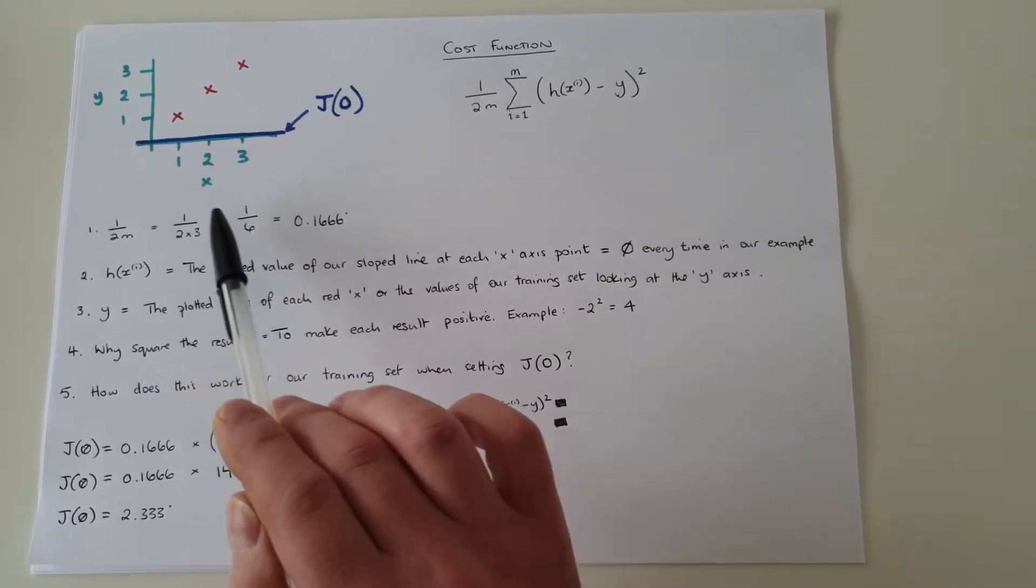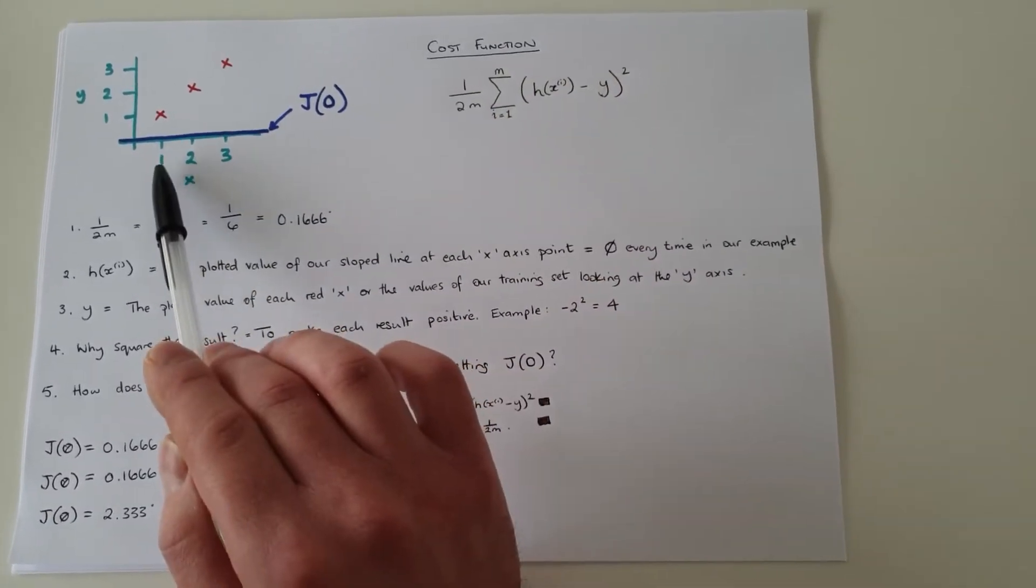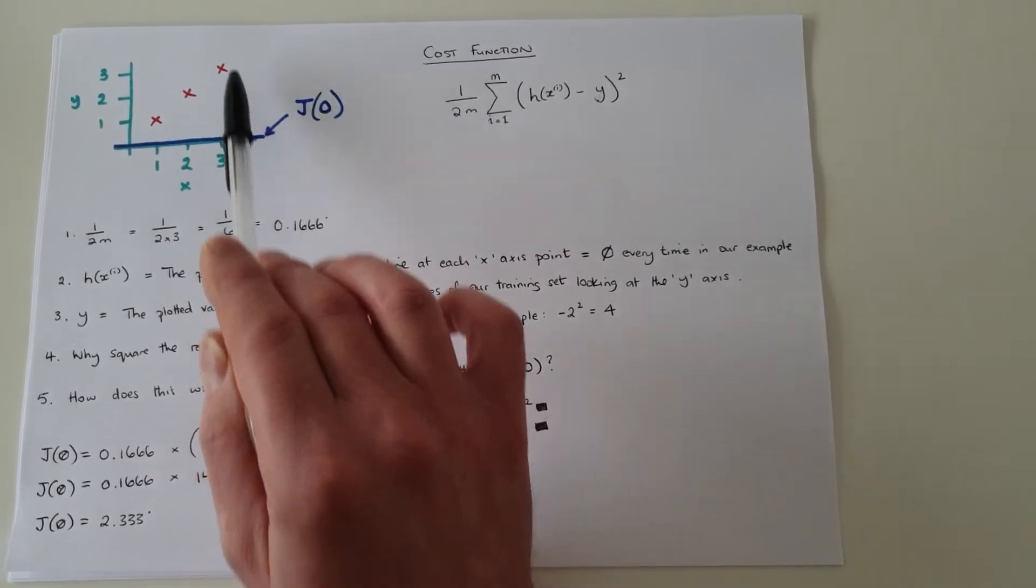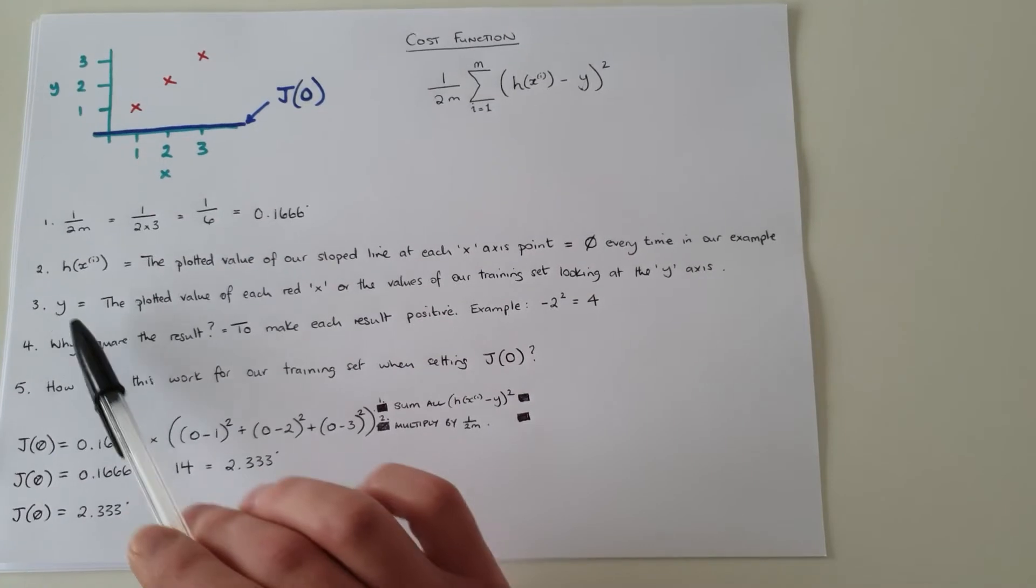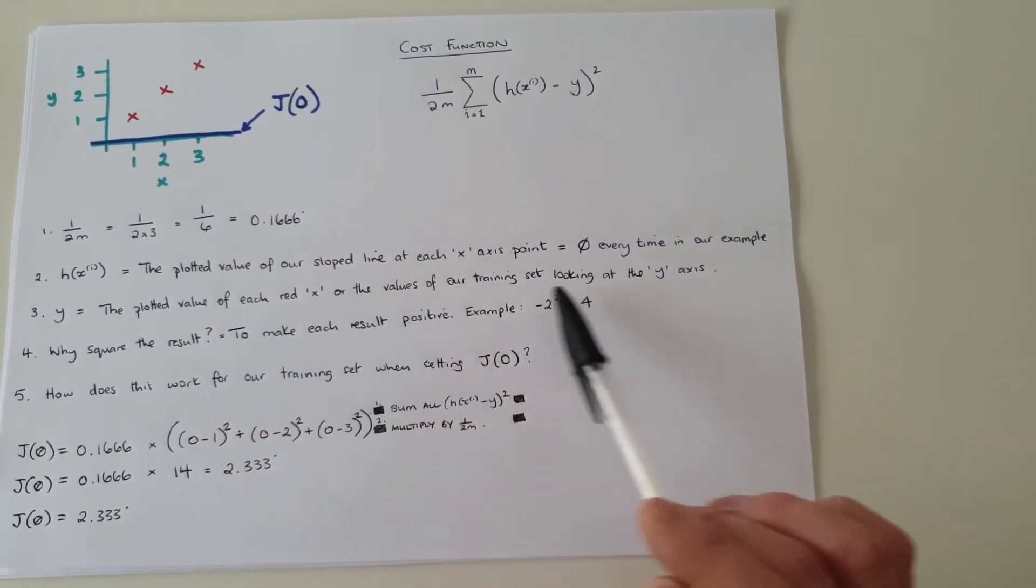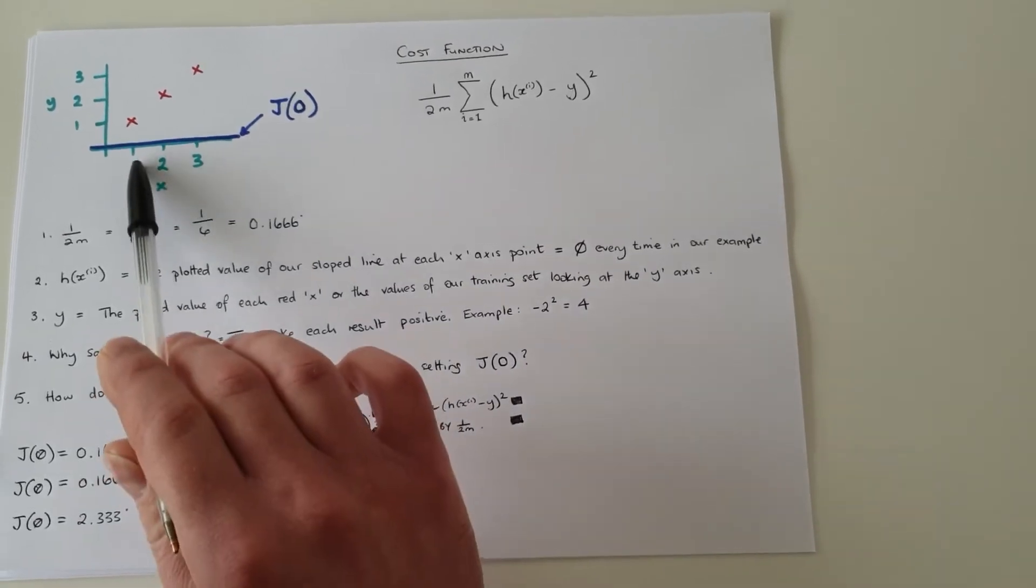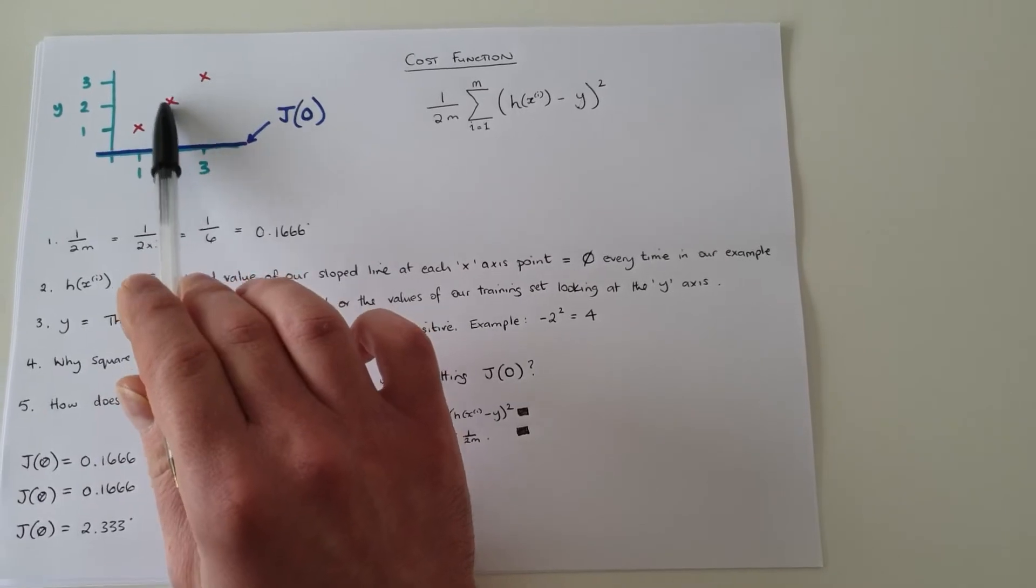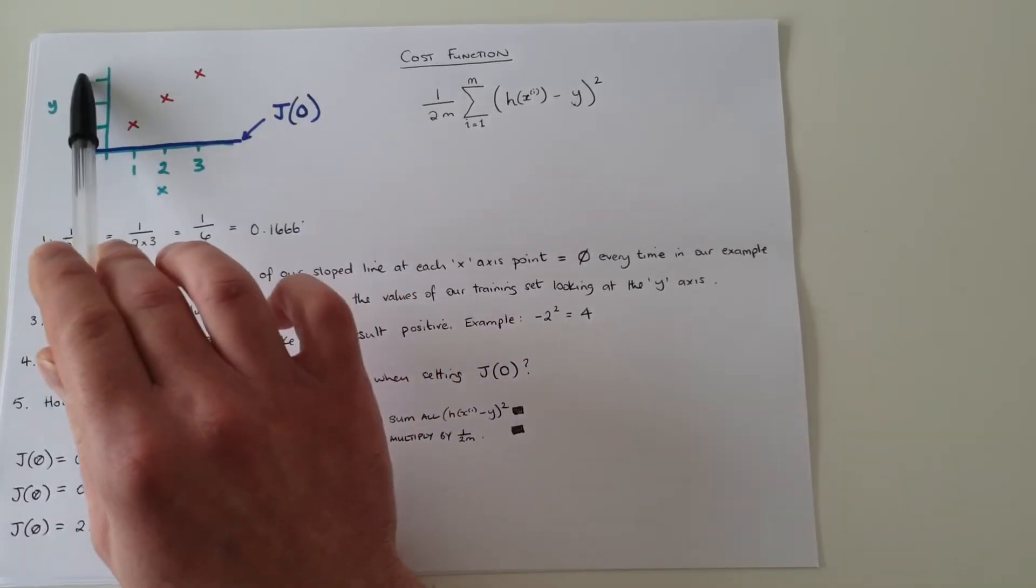And when we loop through this cost function, it's going to loop through three times, one, two, three times, because there's three data points. So the y is the plotted value for each red x, or the values of our training set looking at the y-axis. So our first one is at one, second is at two, and our third is at three.